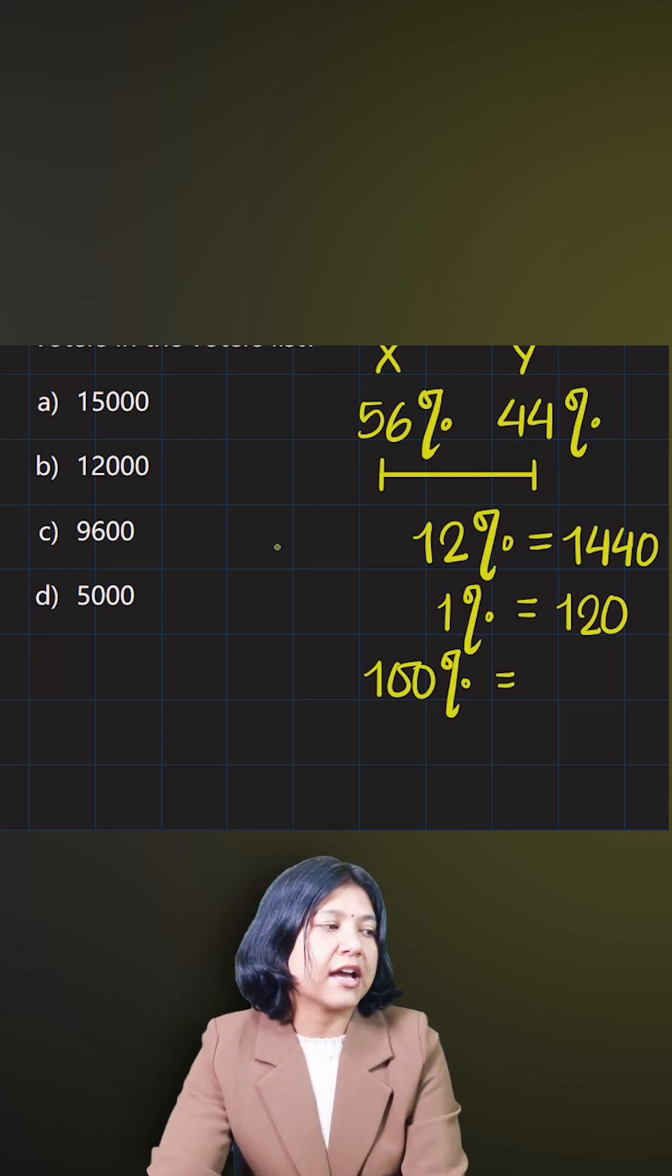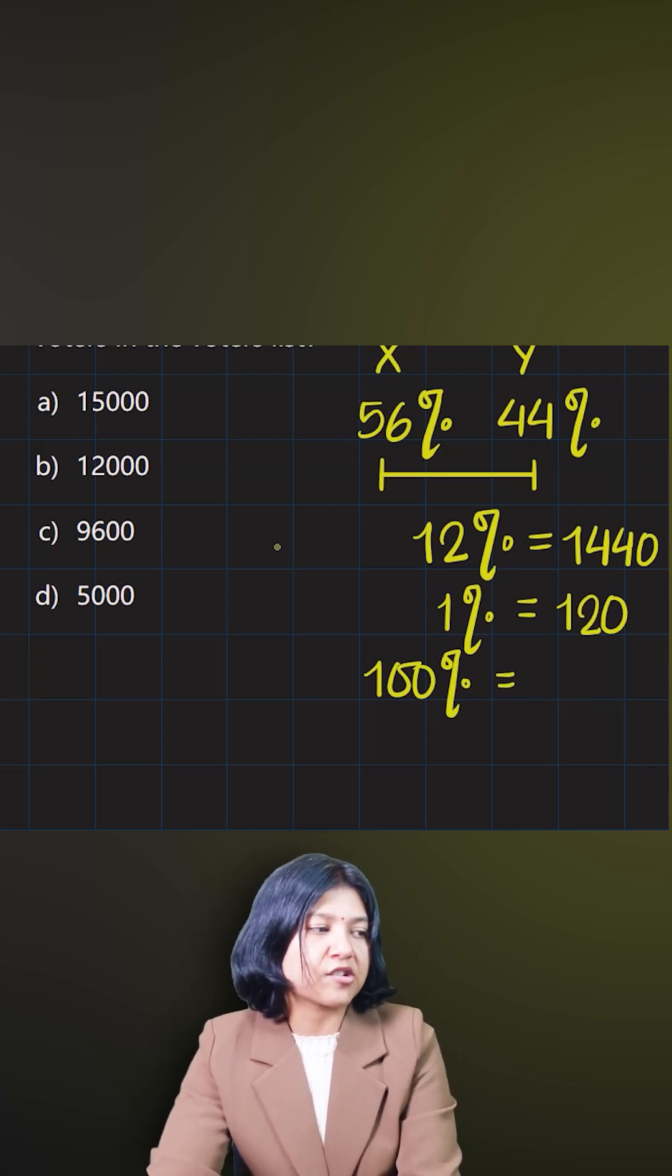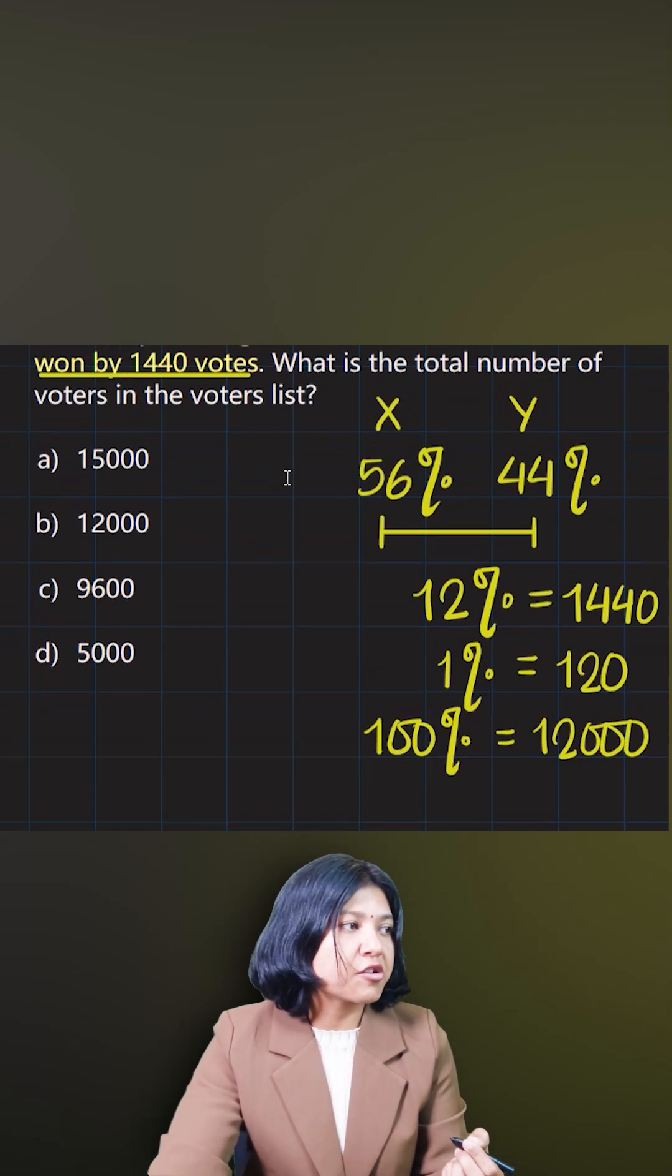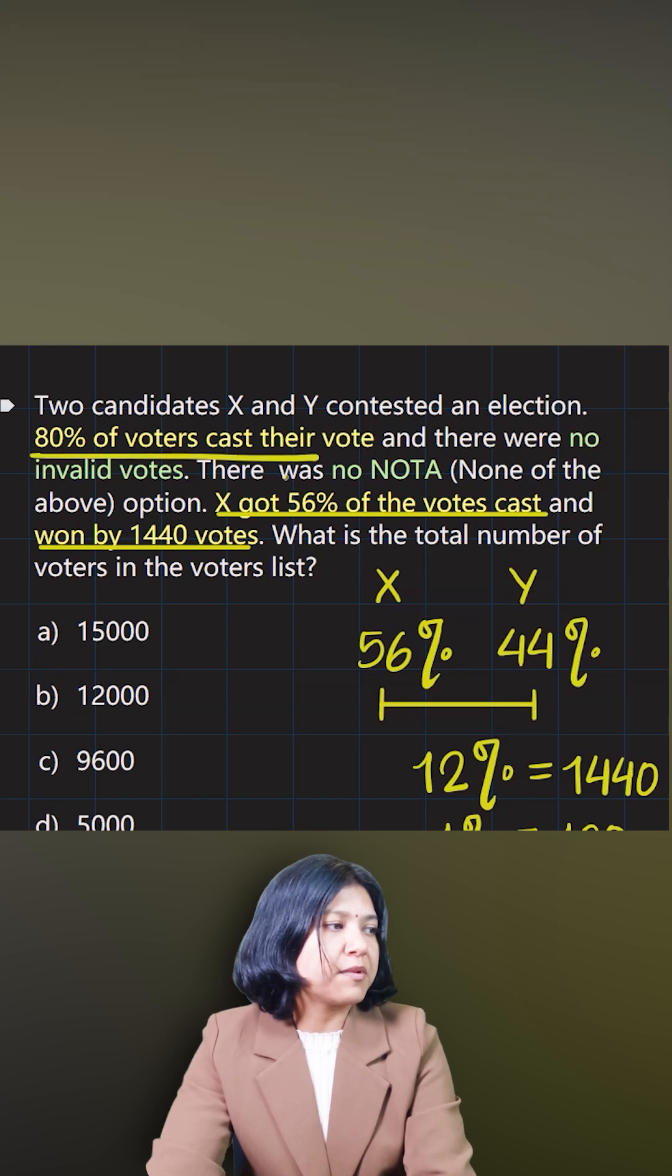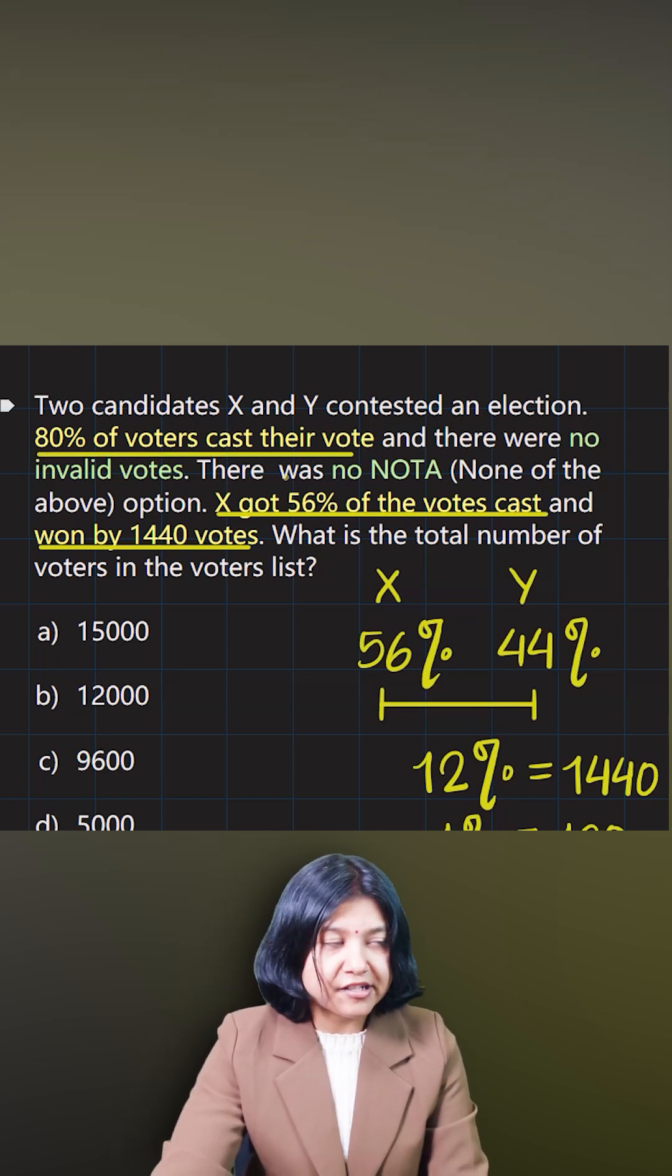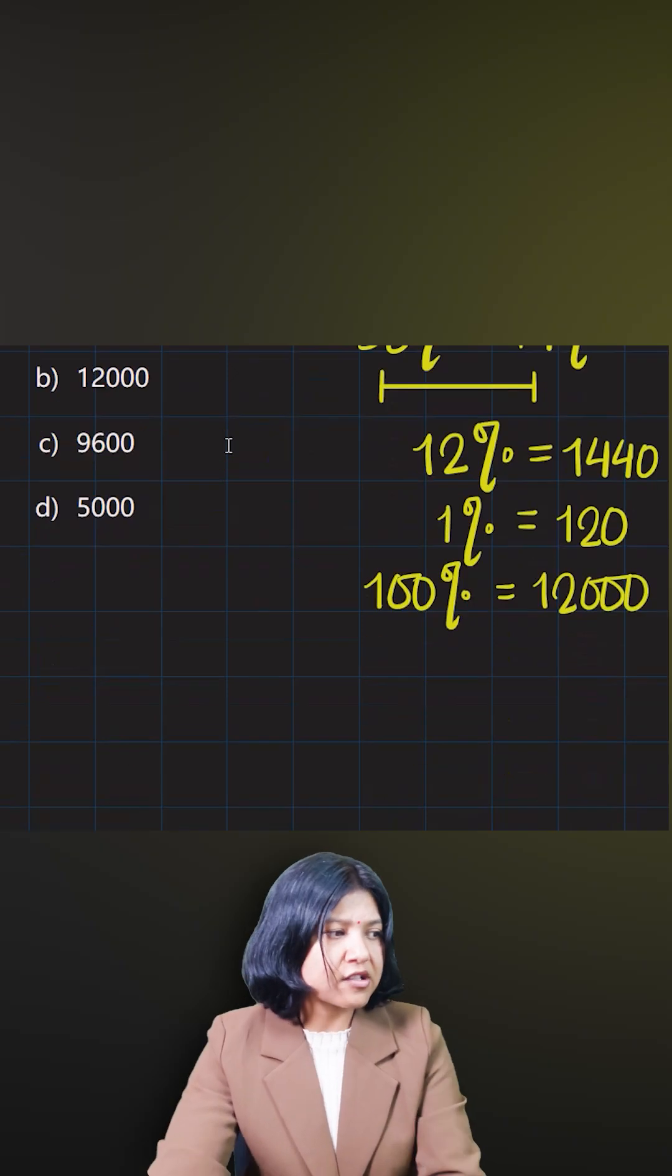So the total voters who voted is 100%, which is 120 times 100, which is 12,000. Now note that this 12,000 actually represents 80% of the people who are in the voter list, because that is what the information tells us.